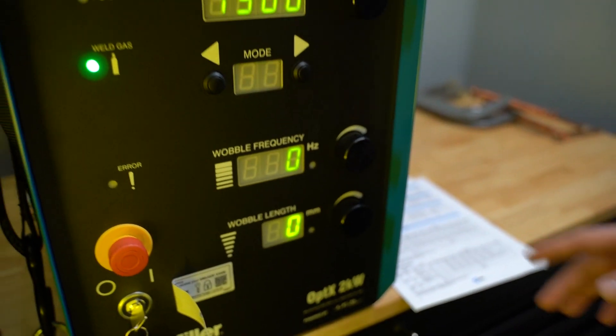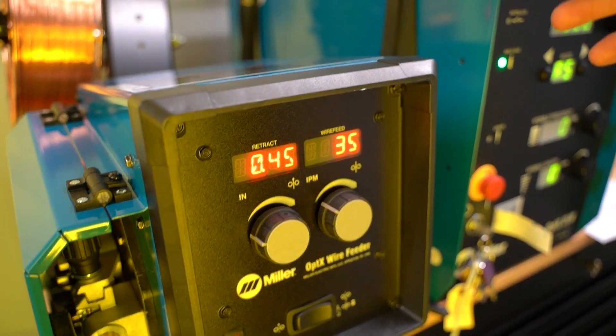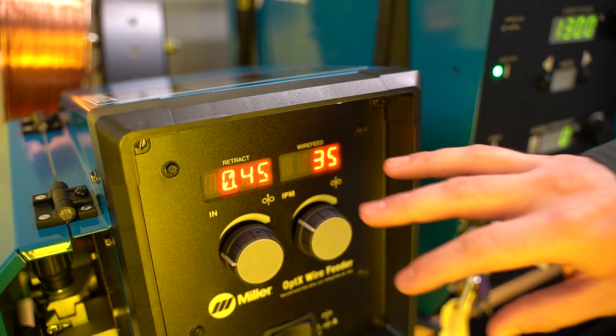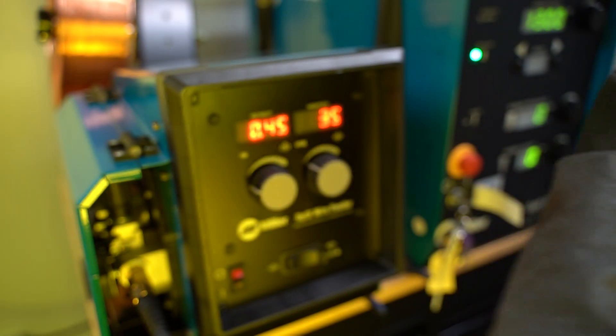On the wire feeder side, standard—what you'd expect from a Miller industrial wire feeder. You've got your wire feed speed. Instead of your voltage, you're setting your retract distance—how far that wire retracts away from the weld pool when you terminate.